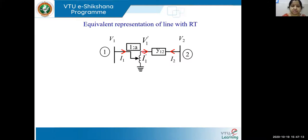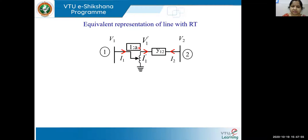The regulating transformer is represented with a ratio of 1:a, where 'a' is called the off-nominal ratio, varying from zero to one. It is called off-nominal because this value is not used for calculating the base value for this line. The ratio is small because regulating transformers are used in transmission lines just to boost line voltages by up to plus or minus 10 percent. The ratio can be 1:a or a:1, and we need to see how the network changes when the ratio changes.